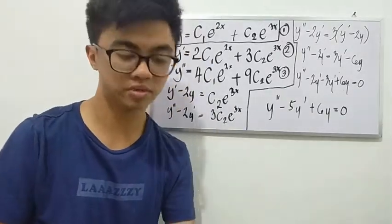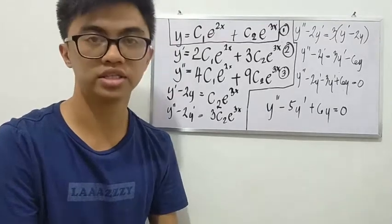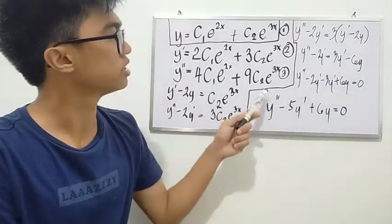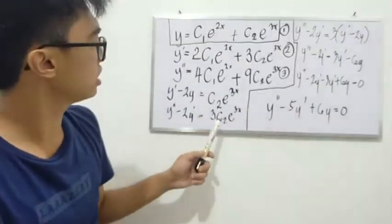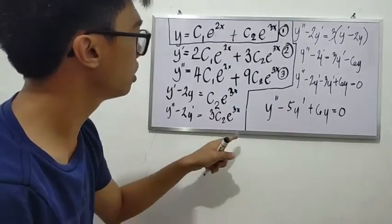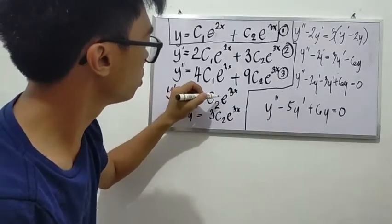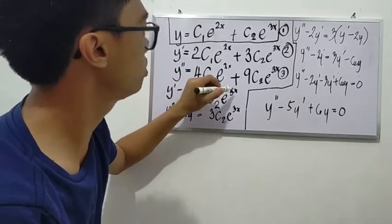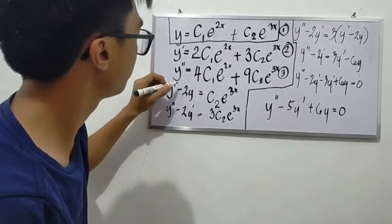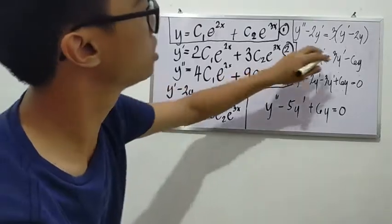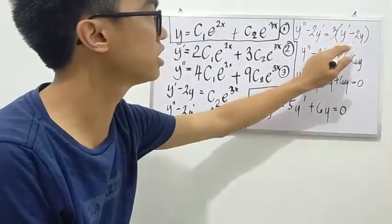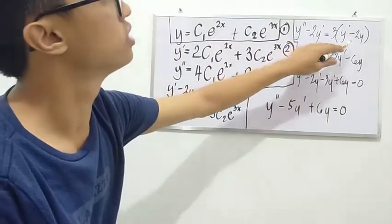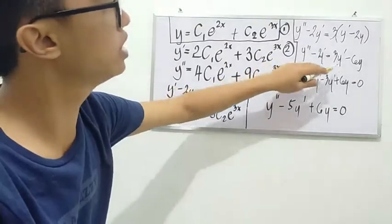Then you have to multiply the second equation by 2 and then subtract it from the third equation. So c sub 2 e to the x equals y prime minus 2y. We have to substitute it and it will be like this.